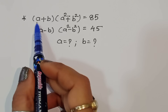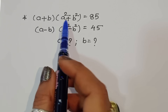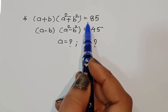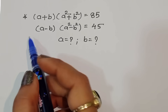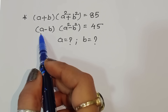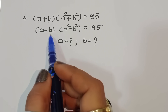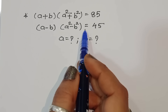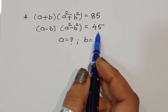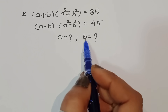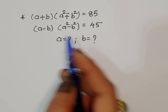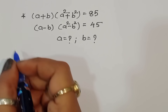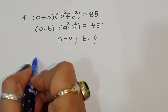The question is: given (a + b)(a² + b²) = 85 and (a - b)(a² - b²) = 45, we have to find out the value of a and b. Let's see the solution.